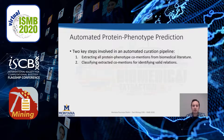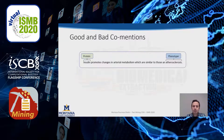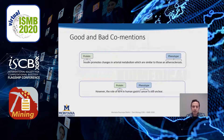The two key steps involved in extracting relations between proteins and phenotypes from biomedical literature are: extracting all protein-phenotype co-mentions, and classifying those co-mentions to find valid relations. A sentence that conveys a relationship between a protein and a phenotype is called a good co-mention, while one that does not is called a bad co-mention.